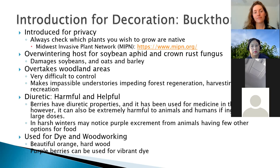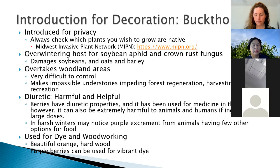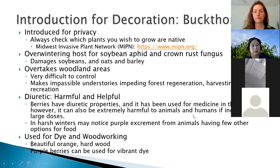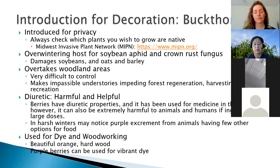Unfortunately for us, buckthorn really affects soybeans, oats, and barley because it's an overwintering host for an aphid that's really negative to soybeans, and a crown rust fungus that can take out oat and barley fields. In terms of woodlands, it takes over the understory completely, making it totally impassable for us and animals, making forest regeneration really difficult, making harvesting out of the woods really difficult, and making recreation hard because of how much it takes over.